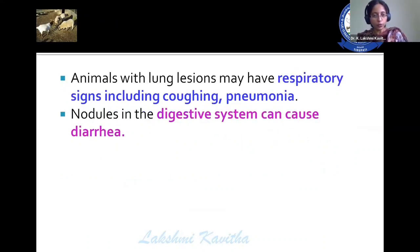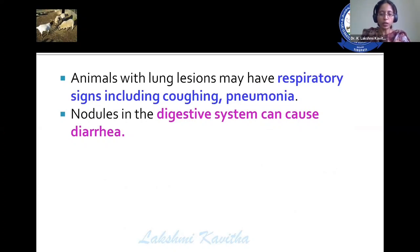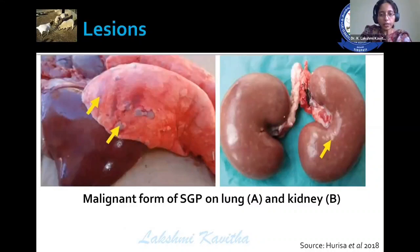Animals with lung lesions show respiratory signs including cough and pneumonia. Nodules in the digestive system lead to diarrhea. These are the malignant lesions observed in sheep pox and goat pox. The lungs get affected, and even the kidneys get affected with the disease.